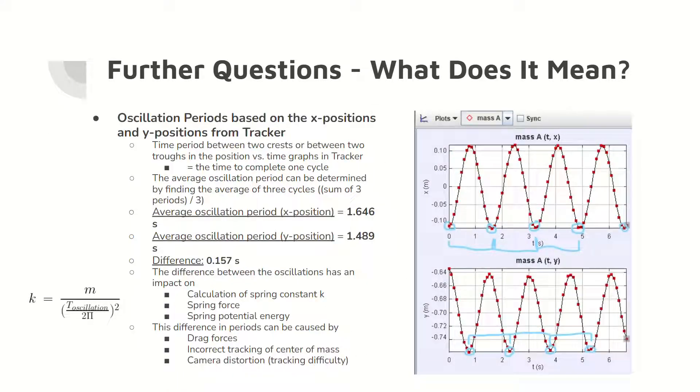By measuring the time difference between troughs in the x position data and y position data and finding the average period, the average oscillation period for the x position and y position can be determined. The average oscillation period in the x position data is 1.646 seconds, while the oscillation period in the y position data is 1.489 seconds. This difference in oscillation period has a major impact on the calculation for the spring constant k, the calculation of the spring force, and the calculation of the spring potential energy. The difference could be caused by drag forces or errors from the tracker analysis.